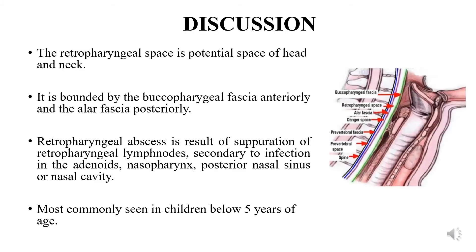Discussion: The retropharyngeal space is a potential space of the head and neck. It is bounded by the buccopharyngeal fascia anteriorly and the alar fascia posteriorly. Retropharyngeal abscess is the result of suppuration of retropharyngeal lymph nodes secondary to infection in the adenoids, nasopharynx, posterior nasal sinus or nasal cavity.